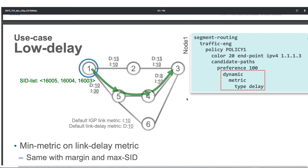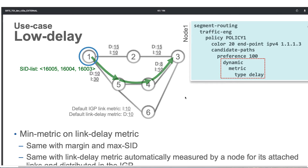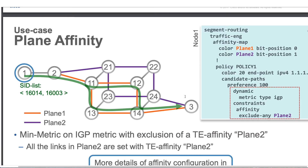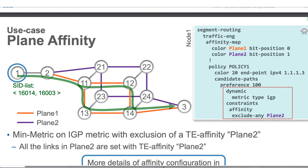So again, these are all different types of optimization objectives for a policy. Now let's take an example about affinity. In this particular example, we have a couple of nodes and these paths are shown with a purple color and a red color, where one plane uses certain nodes and plane two uses different ones.